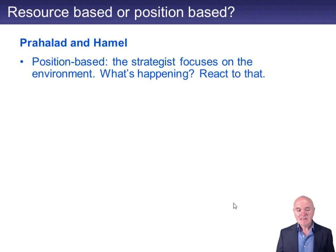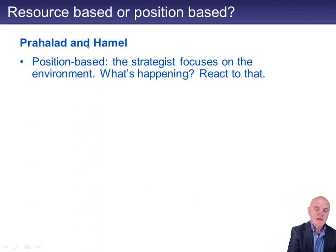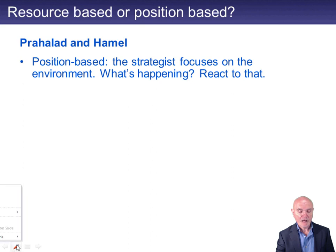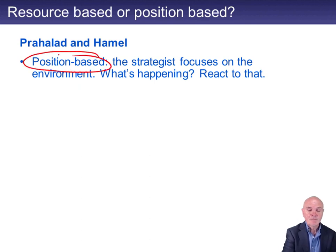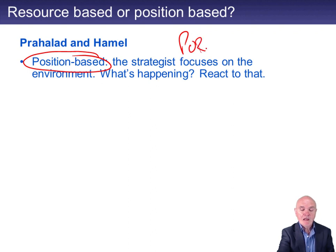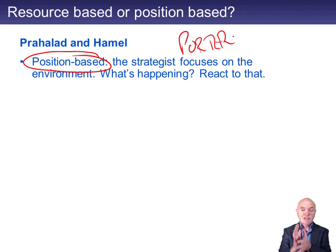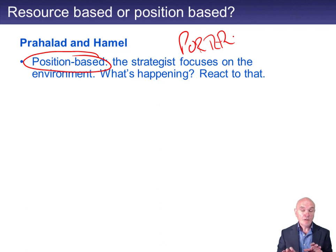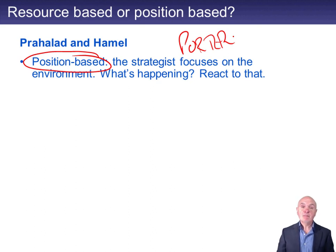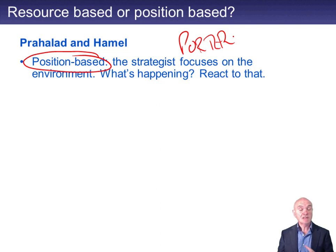In the 1980s, companies were encouraged to adopt what's called a position-based strategy — something associated with Porter. This came from the idea: if you see the environment changing, you should change what you're doing to match it. So if the economy was poor and people didn't have much money, you should launch a range of low-priced products. If a particular product became unpopular — say, conventional film cameras — then you should start making digital cameras. You were changing your position to match the environment.